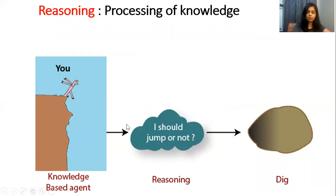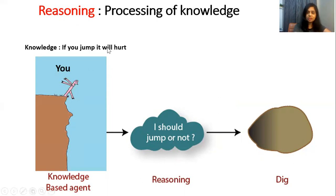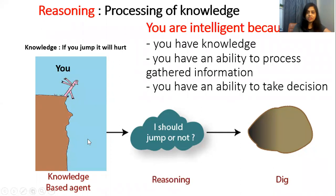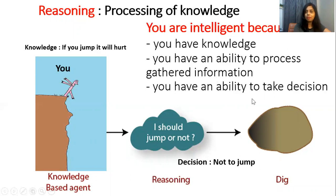Now see this example. Imagine this diagram represents you, and there is a ditch. The knowledge gathered by you throughout your experience says that if you jump, it will hurt very badly. You have experiences, data, and information which tells you that if you jump from this point, it will hurt. And hence, the decision you will take is not to jump. So you are intelligent.